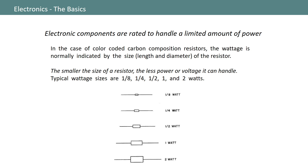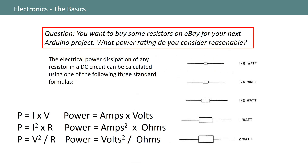As shown, typical wattage sizes for resistors are 1/8, 1/4, 1/2, 1, and 2 watts. This led to a question about resistors — specifically, what power rating for a resistor is reasonable for a typical Arduino project, say one involving standard LEDs? The electrical power dissipation of any resistor can be determined by one of these formulas.